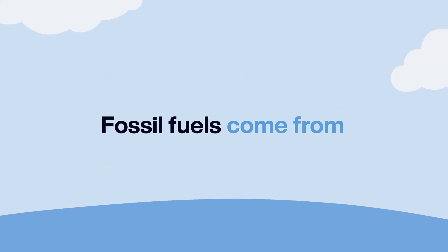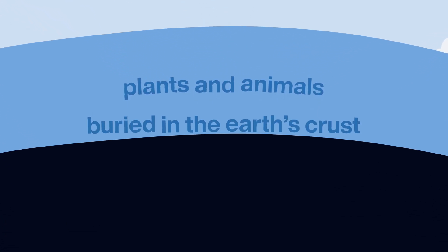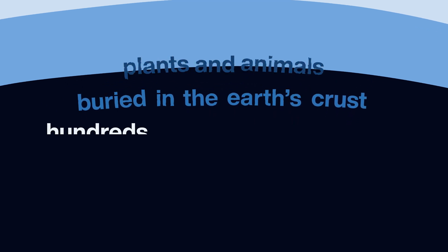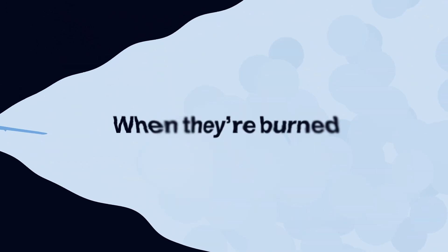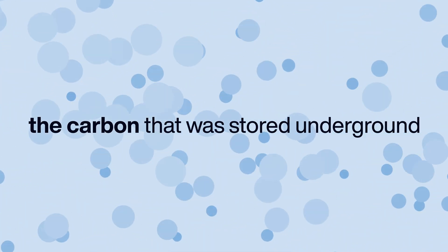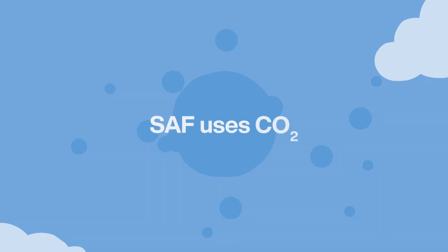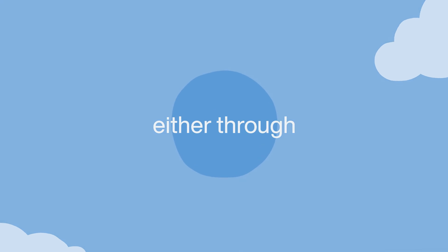Fossil fuels come from decomposing plants and animals buried in the Earth's crust hundreds of millions of years ago. When they're burned, the carbon that was stored underground is released into the air. SAF uses CO2 captured from the atmosphere, either through